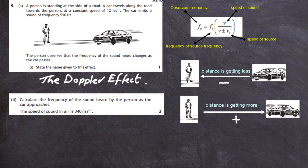In question 5A part 2 we're told the car is moving towards the person. So we'll use the minus Vs in the denominator. Our equation will be F0 equals Fs bracket V divided by V minus Vs since the car is moving towards us.